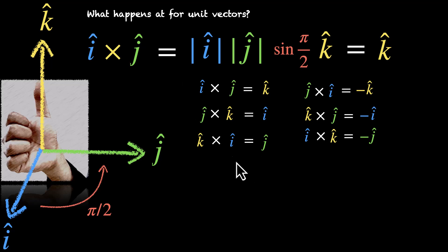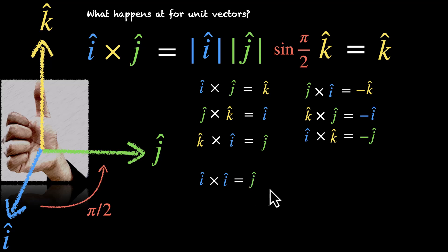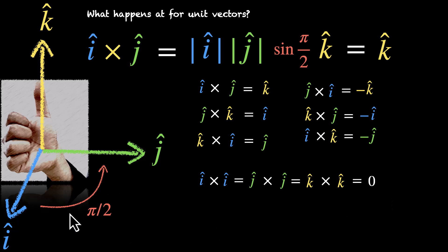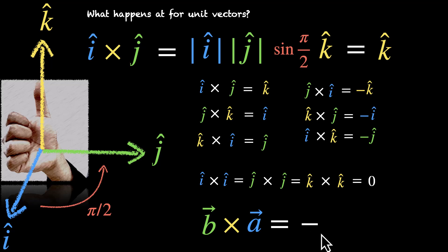Let's talk about collinear vectors. What happens when we take the cross product of i with itself? i cross i equals 0 because the angle between them is zero. The same is true for j cross j or k cross k — all equal zero. And because direction is important, it matters whether you take i cross j or j cross i. We can say that b cross a equals minus a cross b. So these two are negatives of each other.